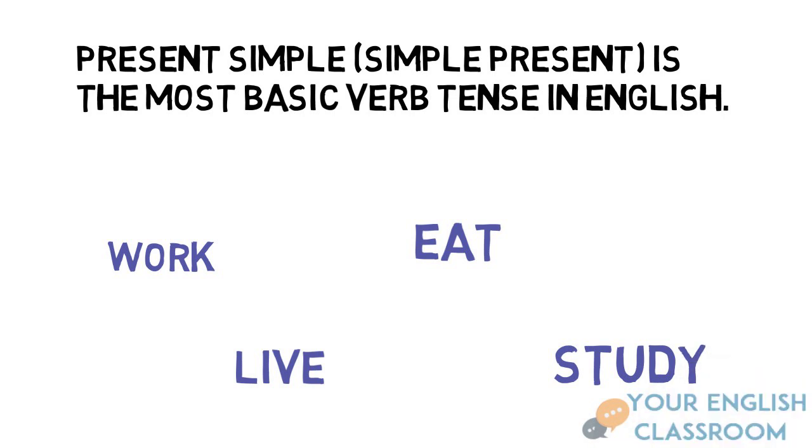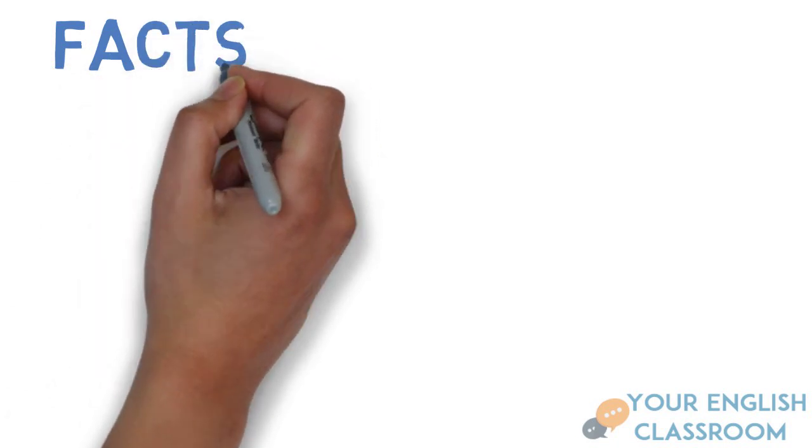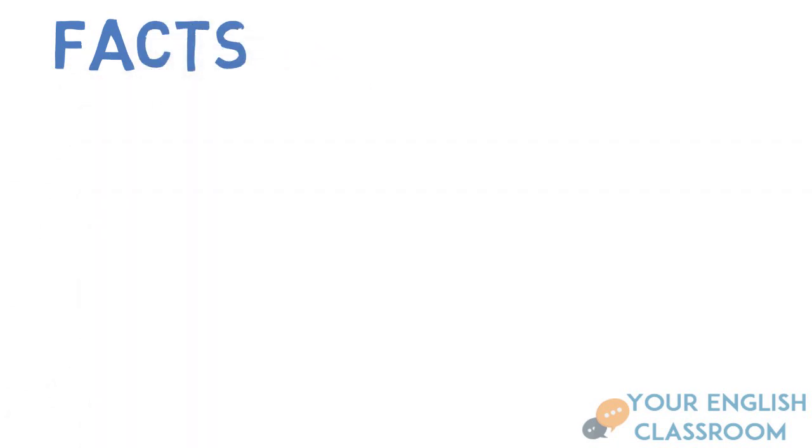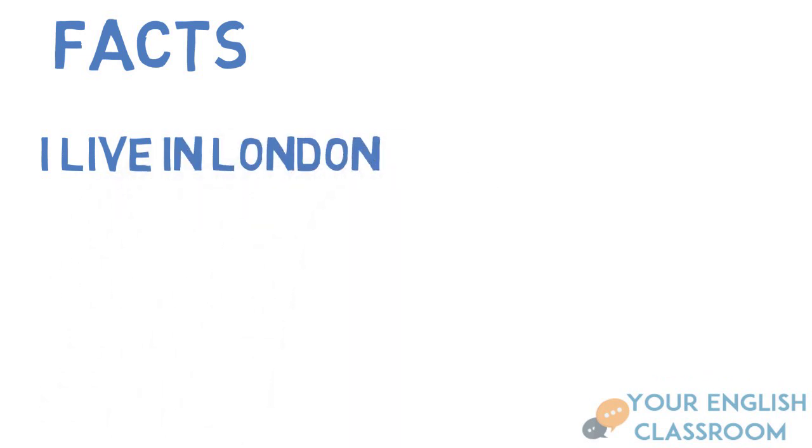But how do we identify the present simple? Well, first and foremost, it has to be a fact. If it's a fact, then it's definitely going to be present simple tense. For example, if I say, I live in London, this is a fact.